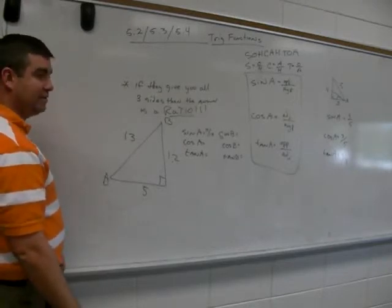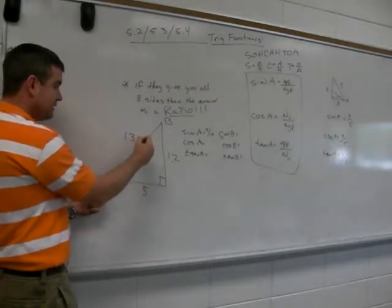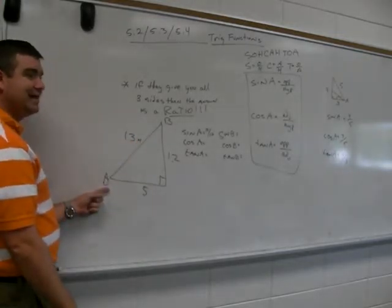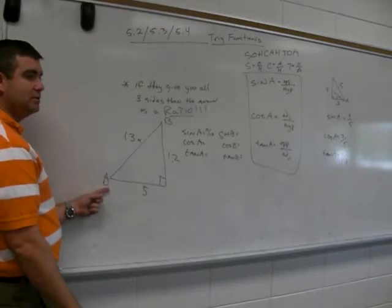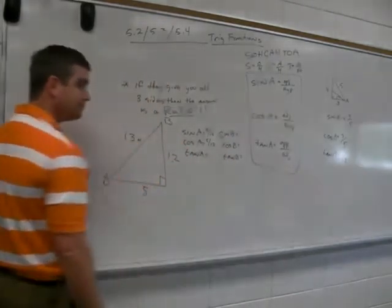What about the cosine of angle A? Well, here's angle A. Here's adjacent. Here's hypotenuse. Like I said, put a little H there to help you. 13 is always your hypotenuse. So the answer would be 5 over 13. You with me?